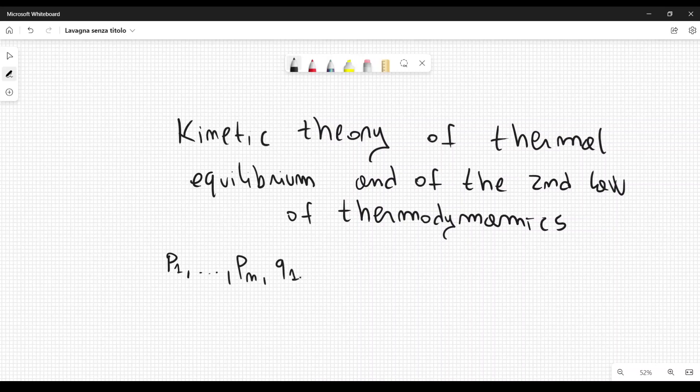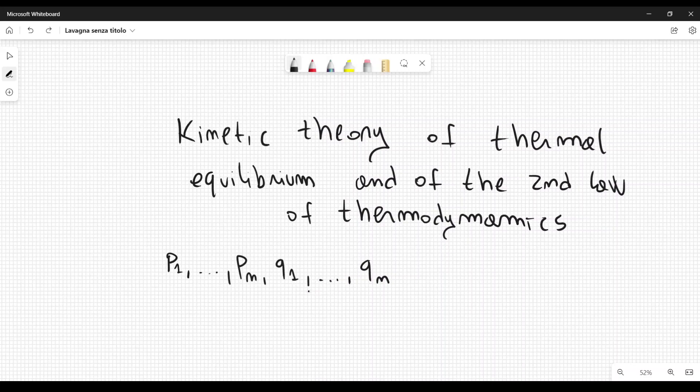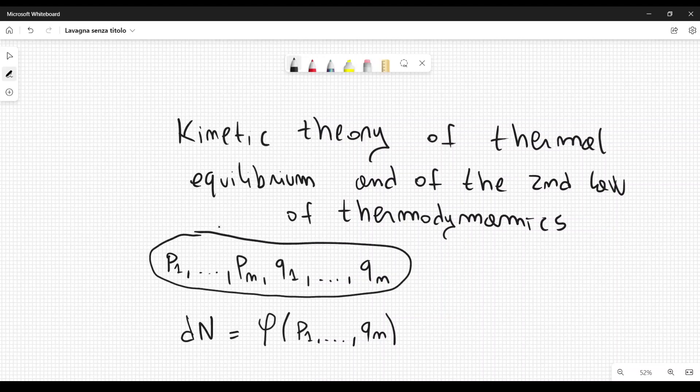P1 to Pn, and we need n coordinates of momentum Q1 to Qn. At first Einstein considered the number of systems whose state variables, so these are the state variables, belong to some infinitesimal region that he called lowercase g at a given time. So the number dN of systems in this very small region is equal to some distribution that I will call phi, just like Einstein did.